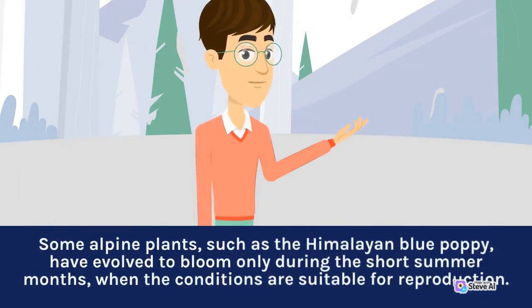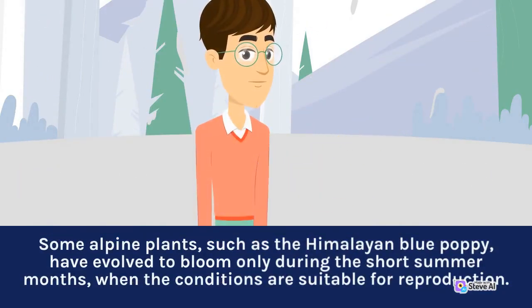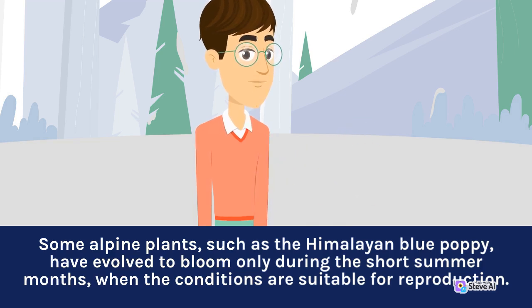Some alpine plants, such as the Himalayan blue poppy, have evolved to bloom only during the short summer months, when the conditions are suitable for reproduction.